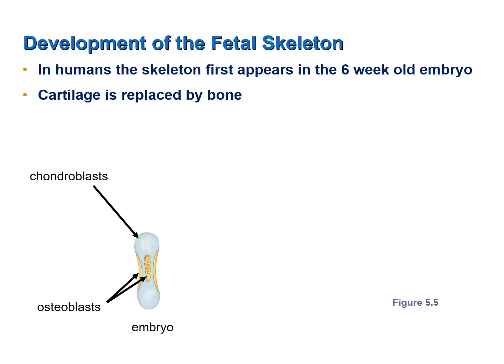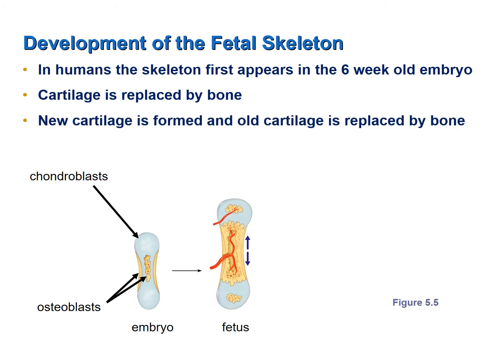That cartilage is replaced over time by bone produced by the osteoblasts. The osteoblasts lay down the organic component of bone — the collagen fibers — and then those collagen fibers are calcified as calcium phosphate crystals form on and around them. Slowly the cartilage is replaced by bone, while chondroblasts lay down new cartilage, and those two processes produce the lengthening of the long bones.